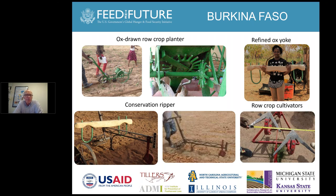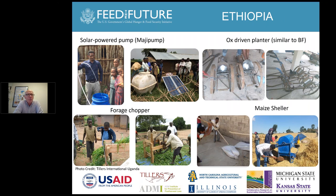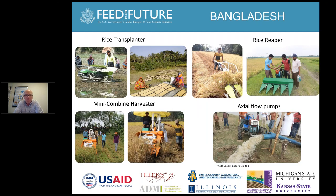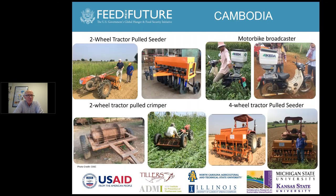In Ethiopia, we are introducing solar-powered pumps for water — the Maji pump that doesn't require a battery — along with ox-driven planters, forage choppers for livestock, and maize shellers. In Bangladesh, technologies include rice transplanters, rice reapers, combine harvesters, and axial flow pumps on the water side. In Cambodia, we are using more single-axle and two-axle tractor power, targeting seeders for rice, a motorcycle-mounted broadcaster, and a crimper to help with cover crops.